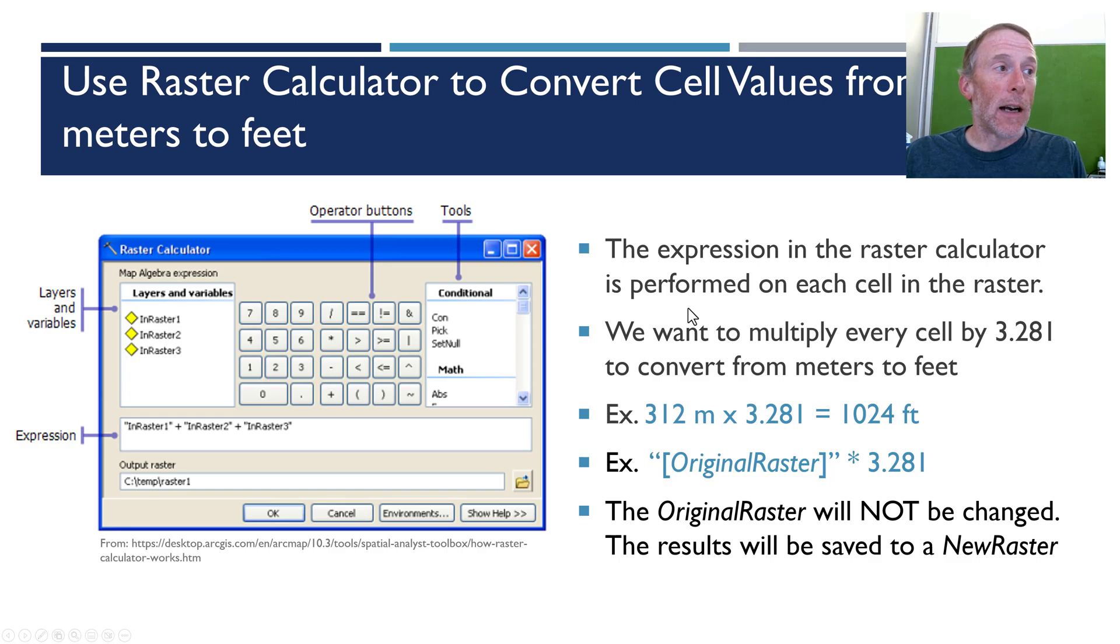The raster calculator dialog box is showing here. I'm not going to get too hung up on the individual pieces and parts in this diagram because we're going to look at this in just a moment in actual ArcGIS but there are two key things we need to look at.